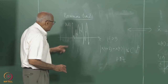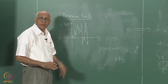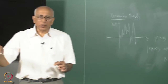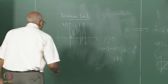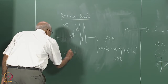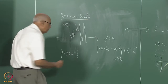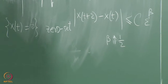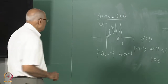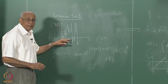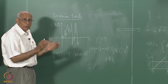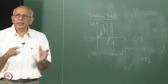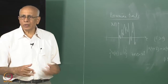The zero set of Brownian motion — the set of times t such that x(t) = 0, starting from the origin — has a fractal (box-counting) dimension of 1/2. This set is not countable. This is a reflection of the fundamental property that in Brownian motion, x² scales like t to the first power, so the length scales like the square root of time — a property that appears repeatedly in this subject.